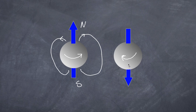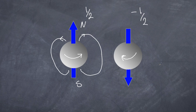In quantum mechanics, we assign these a value. Spin up is given a value of positive one-half, and spin down is given a value of negative one-half. We won't go into the details of why — that goes into quantum mechanics, and I want to spare you from that.